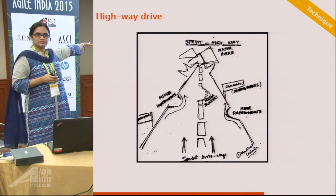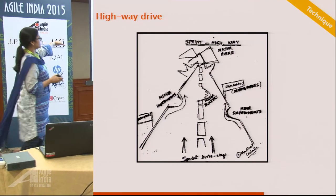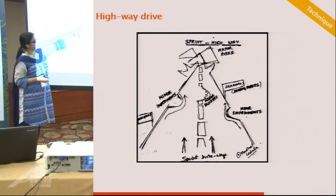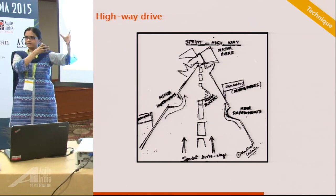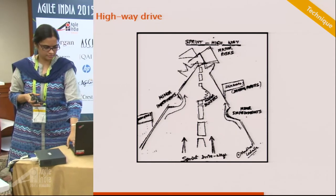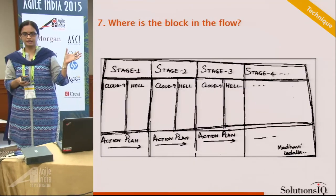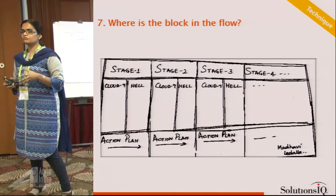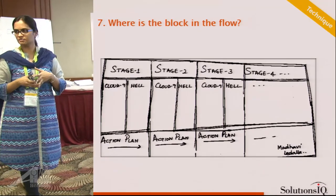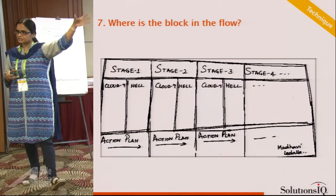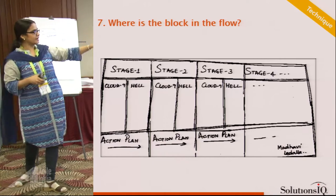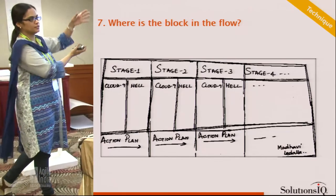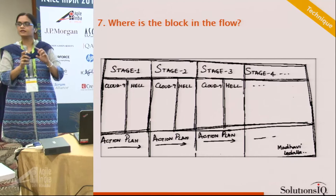The highway drive: the team is on a highway drive — sign posts help the team move ahead, potholes on the road are impediments, and dead ends represent risks. There's also a flow-blocker technique very useful for Kanban teams: when you have many problems and want to understand where the block is, draw the stages applicable to your team. Identify pain points in each stage — whichever stage has the most pain points is the problematic stage — very evident rather than doing a general retrospective.